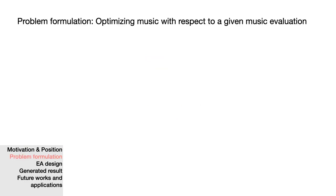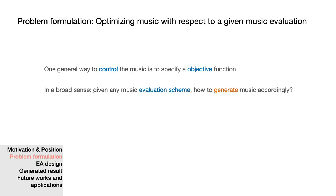One general way to exert our control is by encoding what we want into an objective function. This objective function could be human rating, handcrafted rules, or even neural networks. The core question then becomes, given any music evaluation scheme, how do we generate music accordingly?